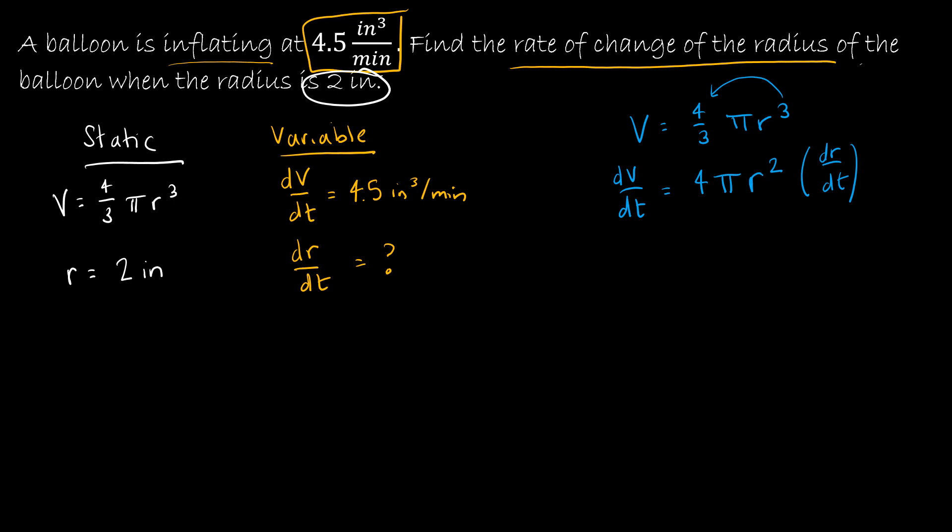Now I plug in what I know. dV over dt is 4.5. I'm not going to put the units of measure on until I get to the end. I still have 4π, r is 2, so that's 2 squared. And then dr dt, that's my unknown. That's what I'm solving for.